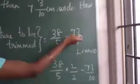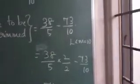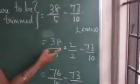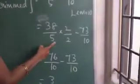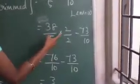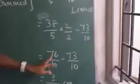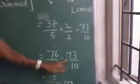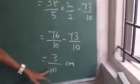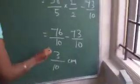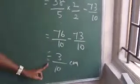The denominators are different: 38/5 minus 73/10. Take the LCM, which is 10. To get 10 as the denominator for 38/5, multiply numerator and denominator by 2: 38 into 2 is 76, giving 76/10. Now subtract: 76/10 minus 73/10 equals 3/10 centimeters.